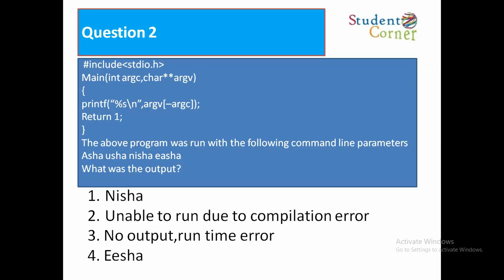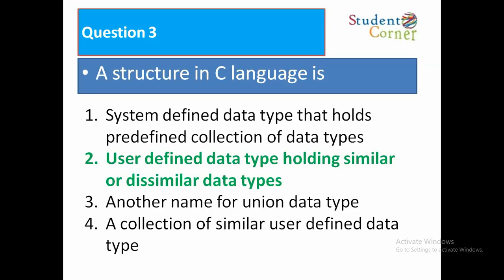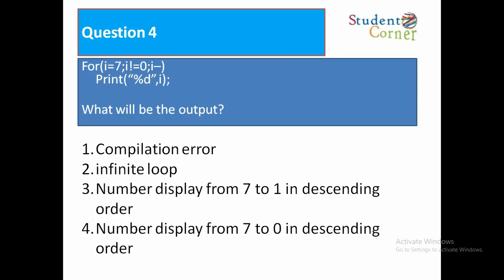Question 3: A structure in C language is: 1. System-defined data type that holds predefined collection of data types, 2. User-defined data type holding similar or dissimilar data types, 3. Another name for union data type, 4. A collection of similar user-defined data types. The answer is option 2: user-defined data type holding similar or dissimilar data types. Structure means heterogeneous collection of data; array means homogeneous collection of data.